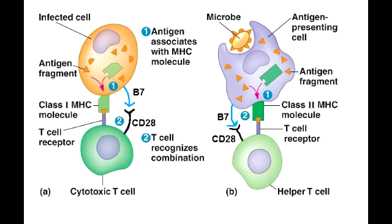Describe the process of naive T cell activation. Please refer to the picture on your screens to understand naive T cell activation. On the left you can see cytotoxic T cell activation, whereas on the right you see helper T cell activation. In both cases, you can see a foreign body being phagocytosed by a dendritic cell or antigen presenting cell. That foreign body antigen is now going to combine with MHC, forming the antigen-MHC complex.